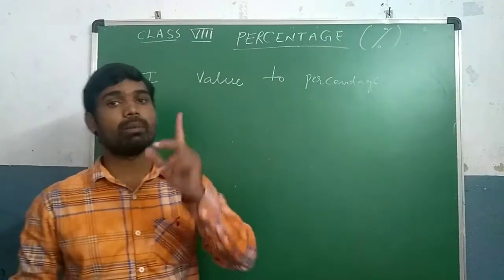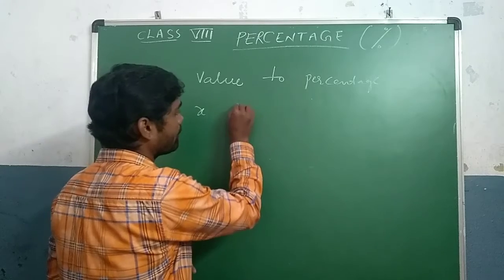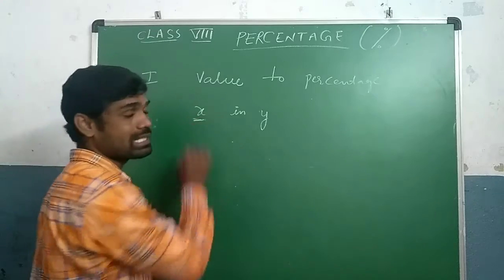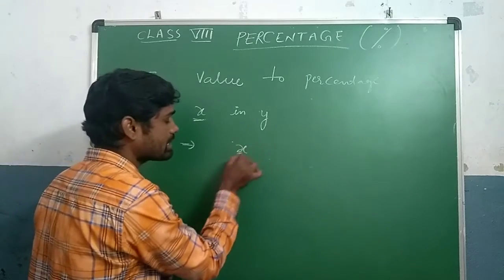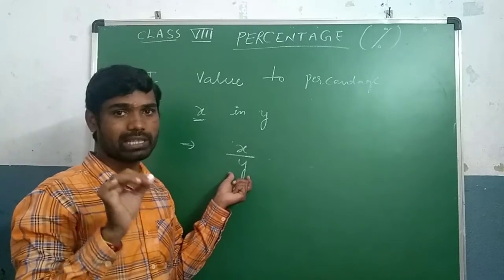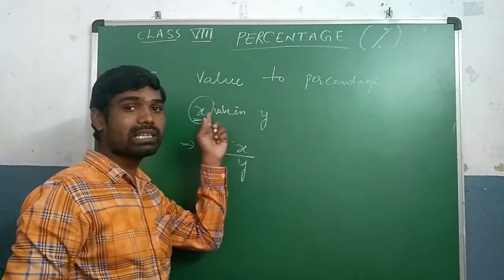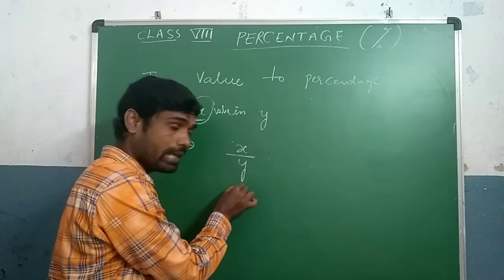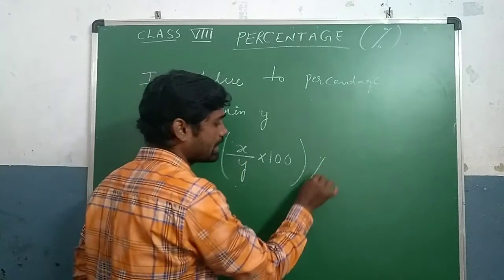So the first thing: value to percentage. When some value is there — for example, x is the value in y — then what is the percentage of x? The general formula is: x by y into hundred, with the percentage symbol. Here y is the whole, meaning 'from which' value.